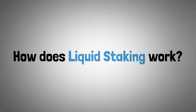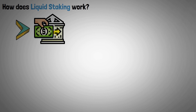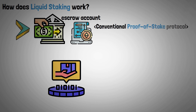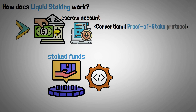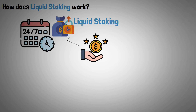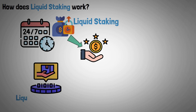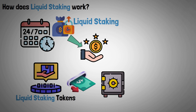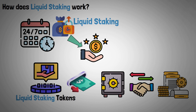Now let's explain how liquid staking works. Liquid staking operates by depositing money into an escrow account that is managed by a smart contract, just like in conventional proof-of-stake protocols. Tokenized versions of the staked funds are then issued by the platform. Even though you can now use your staked funds for other purposes thanks to liquid staking, you still earn rewards from your staked funds. These liquid staking tokens may then be moved off the platform, stored elsewhere, traded or used without having an effect on the initial deposit.